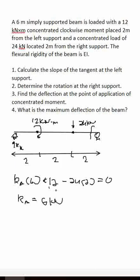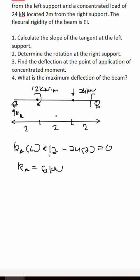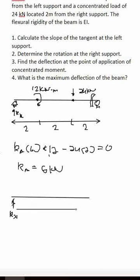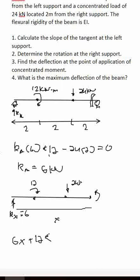We can now create the equation of the moment, making sure all loads are covered. Cutting a section at distance X from the left support and summing moments, we get: M equals 6X plus 12 times (X minus 2) raised to the power 0, since a concentrated moment has no moment arm.